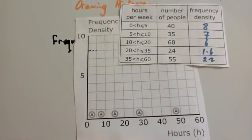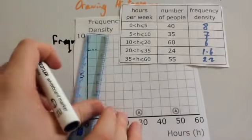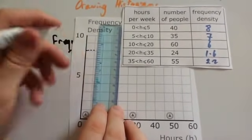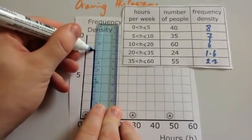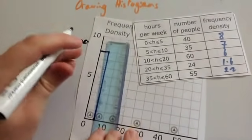So, you get your ruler, and you draw your bar. So your bar will go from 0 to 5, up to 8, and across using your ruler. And then you shade it in.